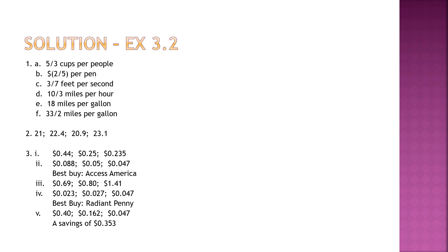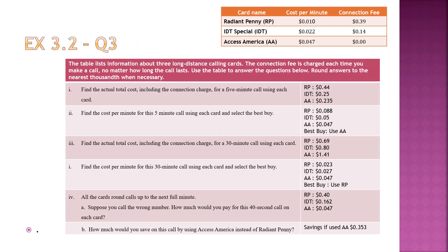I'll go through question 3, which students are always confused about. The table lists information about three long-distance calling cards. The connection fee is charged each time you make a call, no matter how long the call lasts. To find the actual total cost including the connection charge for a five-minute call: Radiant Penny is $0.01 per minute, so 0.01 times 5 plus the connection fee. The connection fee is one-time only. Same for the second and third cards — times five and plus connection fee. The cost per minute is then that total divided by five.